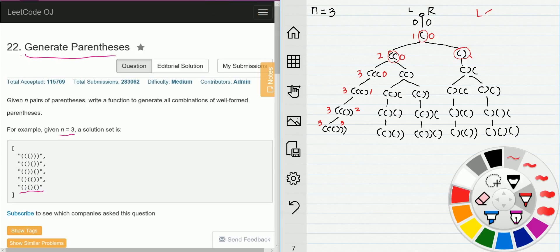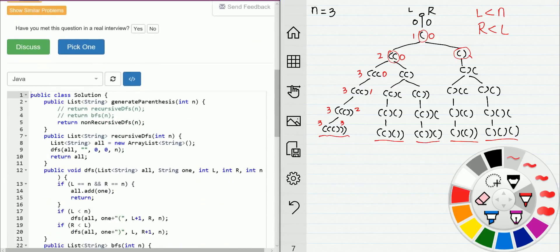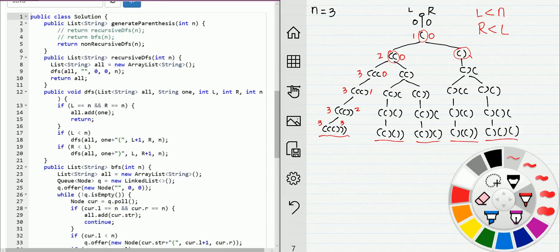We keep doing the same. As long as number of left parentheses less than n, we can add left parentheses into the string. As long as number of right less than number of left, we can add right parentheses into the string. Until we reach to the leaf node of the tree, we can use DFS and BFS to solve the problem.